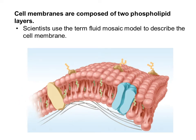Scientists use the term fluid mosaic model to describe the cell membrane, because if you're looking down at the cell membrane from above, what you're going to see is all those little phosphate heads, and then dotted among those phosphate heads, you're going to see proteins that are stuck in there. Each of these kind of potato-looking things are all proteins that are stuck in the cell membrane.